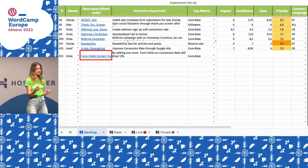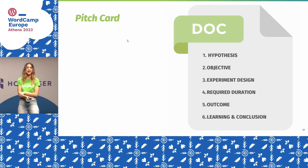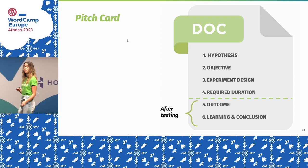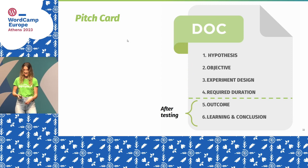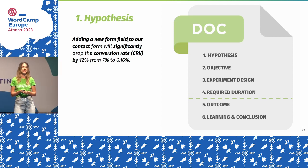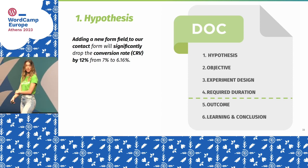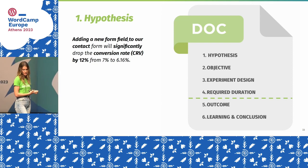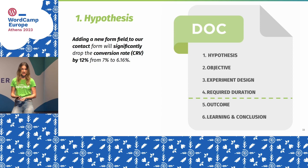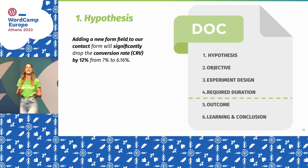The pitch card is just a simple Google Doc. I'll show you the metrics we used there. It's divided into two parts: before testing and after testing. It starts with the hypothesis. When writing the hypothesis, you write down what is going to happen — and it's good to include a number. We said: if we add one more form field, our conversion rate will drop 12%, from 7% to 6.1%. That number came from research, not just gut feeling. Write your hypothesis in a measurable way.